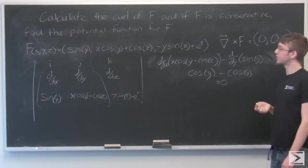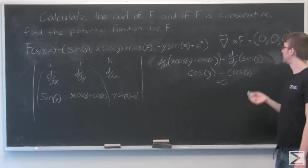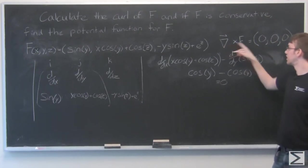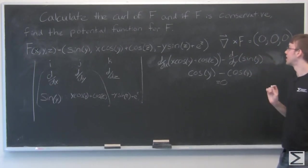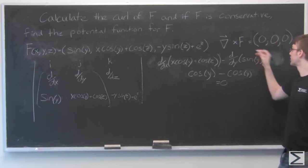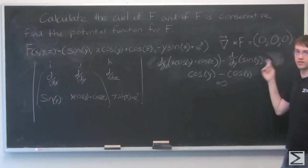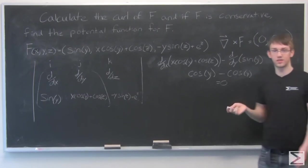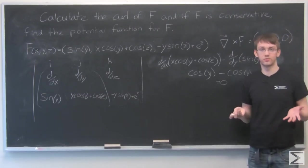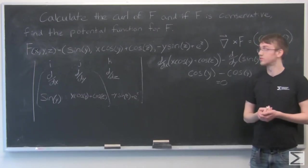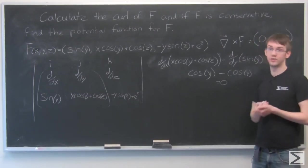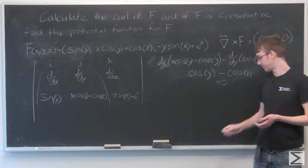So we've got the curl of f — that's the gradient vector cross product with f — and that's 0. So that means that f is conservative. So now we need to find a potential function for f.